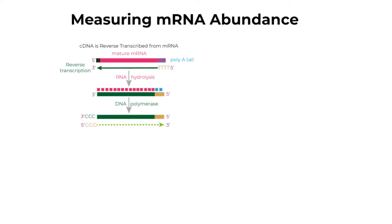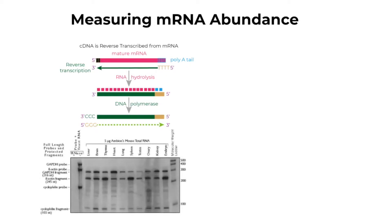This is done via a process called reverse transcription. In nature, this process is carried out by retroviruses. In northern blotting, an RNA sample is digested into fragments that are separated by size in a gel using electrophoresis. They are then transferred to a membrane that can be probed to test for the presence of a hypothesized RNA transcript.